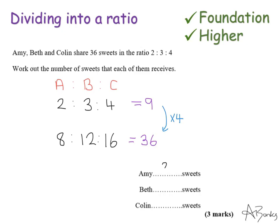So my answer is Amy gets 8, Beth gets 12, and Colin gets 16.